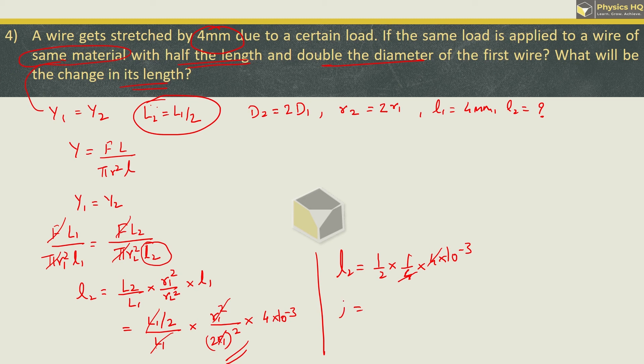And we got 4 into 10 raised to minus 3. So 4 will cancel. So 1 by 2 is nothing but 0.5 into 10 raised to minus 3, or you can write this as 0.5 mm. So this is the elongation in the second wire. Hope you all understood this.